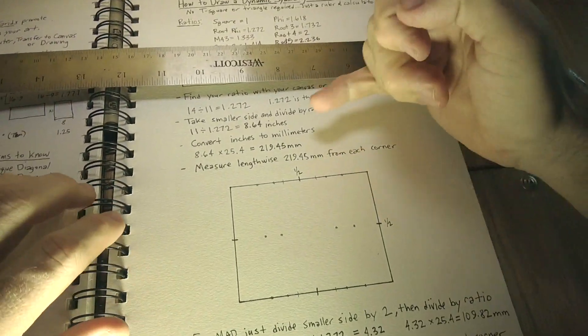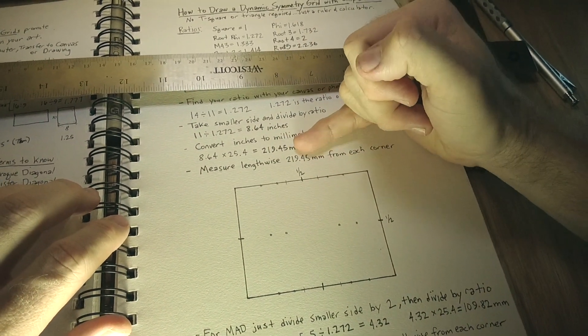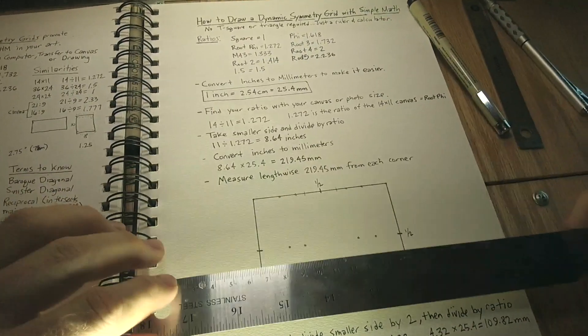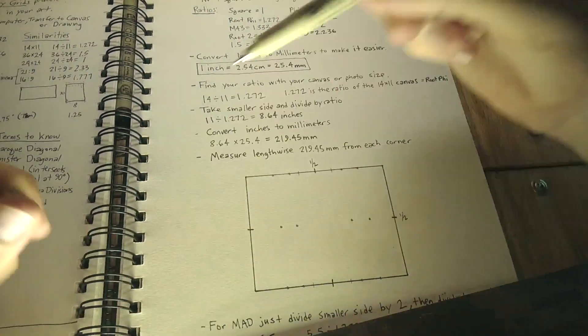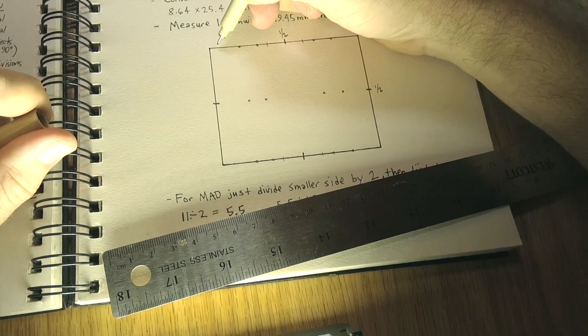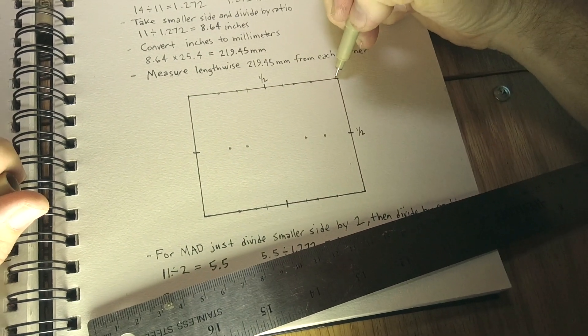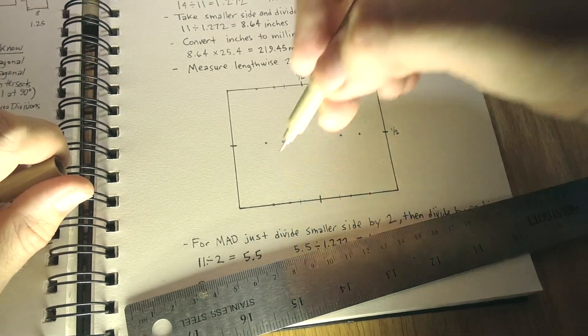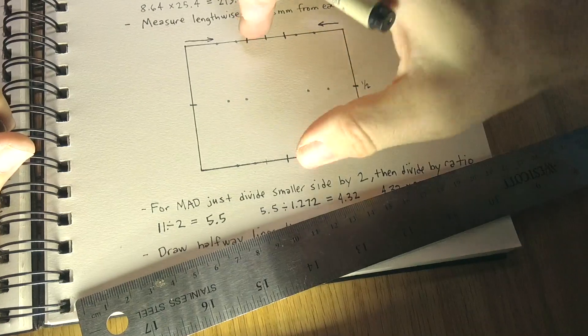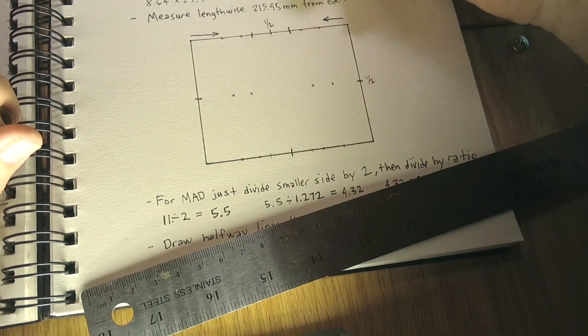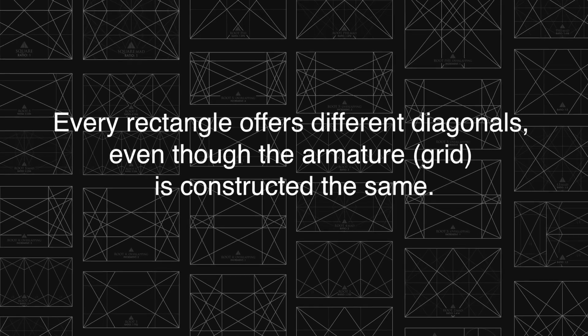Okay, so once you have that 219.45 or whatever measurement it is, you're going to take your canvas and you're going to measure from each corner 219.45 millimeters this way and then 219.45 millimeters this way and do it from each corner. On the root 5 specifically, we're going to actually cross over the halfway mark. That's not for every root rectangle.